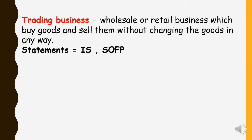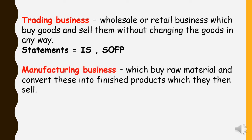Now we move to manufacturing business. A manufacturing business buys raw materials and converts them into finished products, then sells them. So trading business: buy and sell. Manufacturing business: buy raw material, process and convert it into finished product, then sell to the market. Manufacturing businesses have a special account in addition to the income statement and statement of financial position.